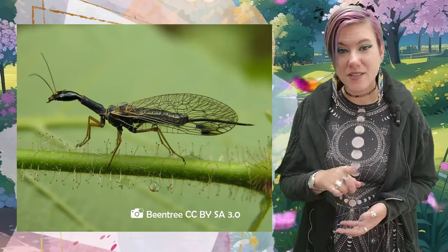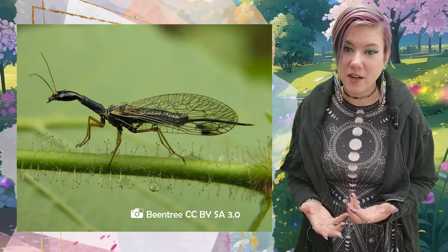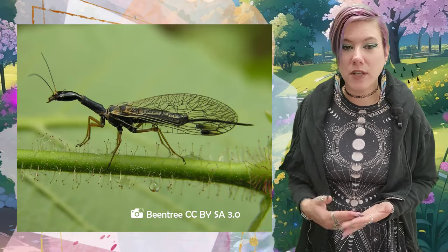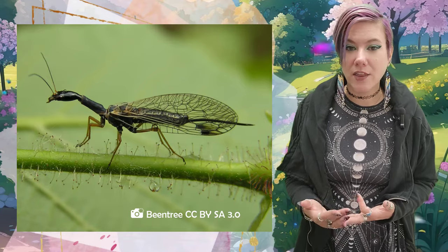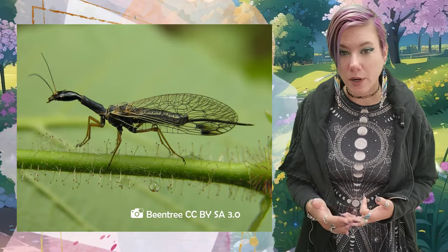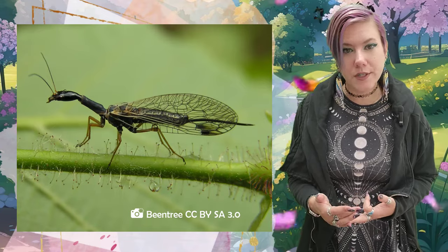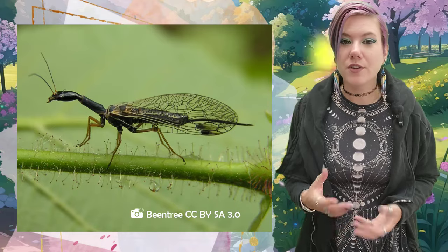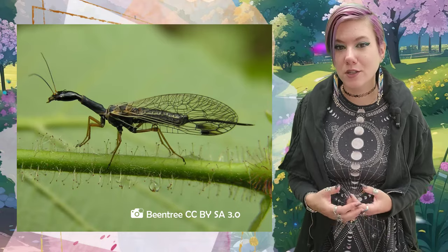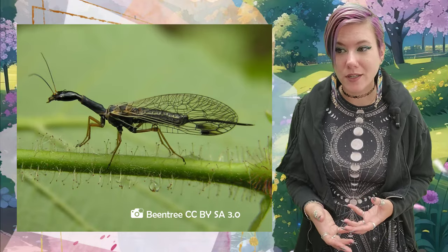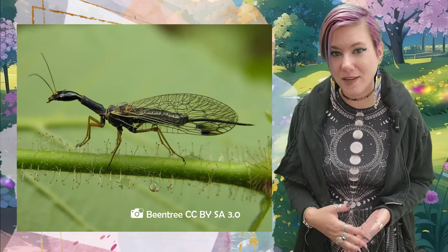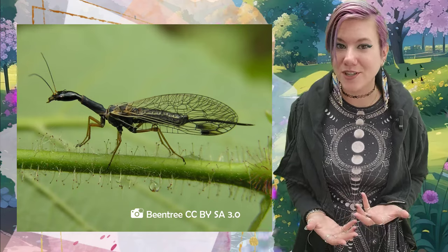That long ovipositor that gives the snake flies their characteristic shape is used to lay their eggs either under bark on trees or under leaf litter. So this characteristic is actually really important for the insect's lifestyle and isn't just what we named them after.